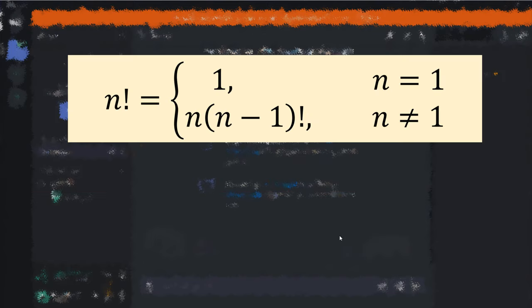We're going to write our program by using this recursive formula. It says that if n is equal to 1 then the value of n factorial is going to be 1.